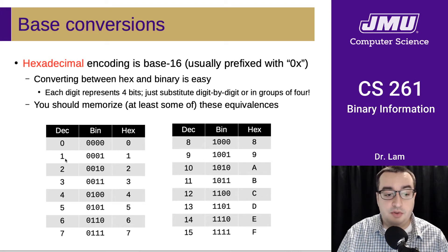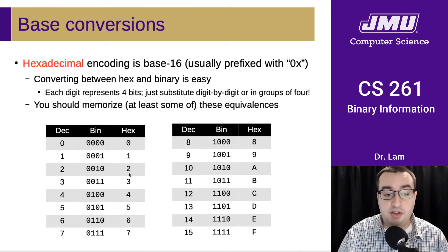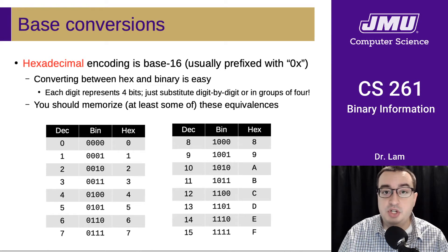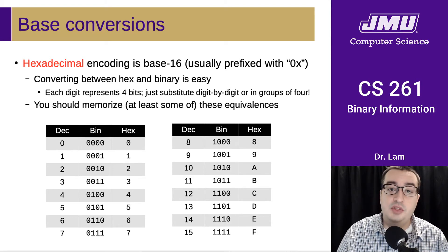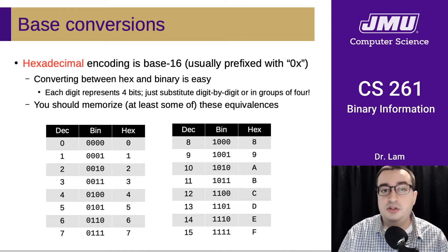And so these are the equivalencies. So this is the decimal value, the binary value, and the hexadecimal value. And this hexadecimal value is exactly equivalent to this binary value, and so forth, all the way down. And so converting back and forth is pretty easy — you just have to do the substitution. If you're converting from hex to binary, you'll get 4 binary bits for every incoming hex digit. If you're going the other way, you'll split up the binary into groups of 4, and then you'll convert each of those groups of 4 to hexadecimal.